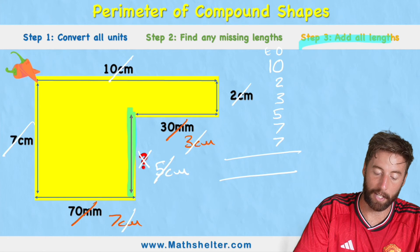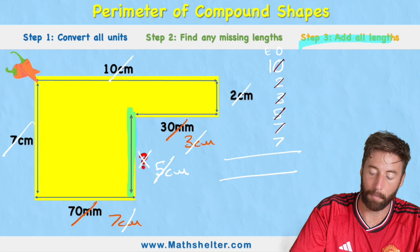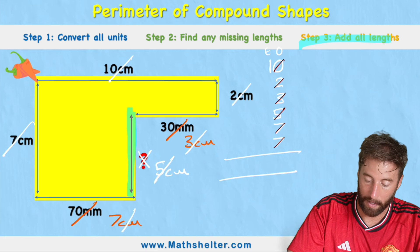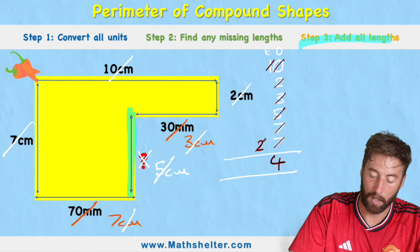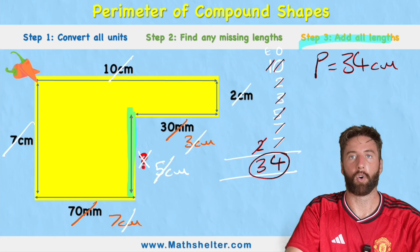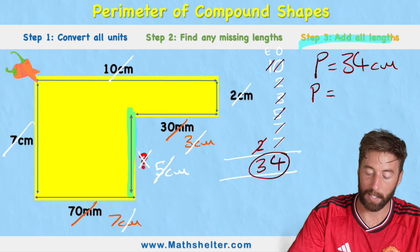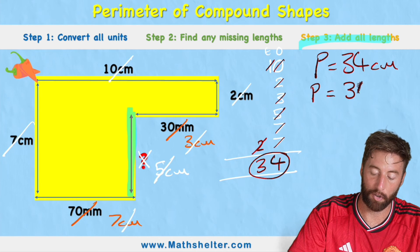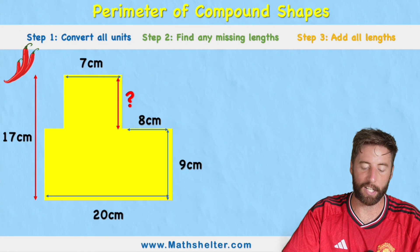In the ones column: 0 + 2 + 3 + 5 + 7 + 7 = 24, carry the 2. In the tens: 1 + 1 + carried 2 = 4... wait, 1 and 2 equals 3. The answer is 34. So the perimeter of this compound shape is 34 centimeters, or in millimeters — since there are 10 millimeters per centimeter — 340 millimeters.